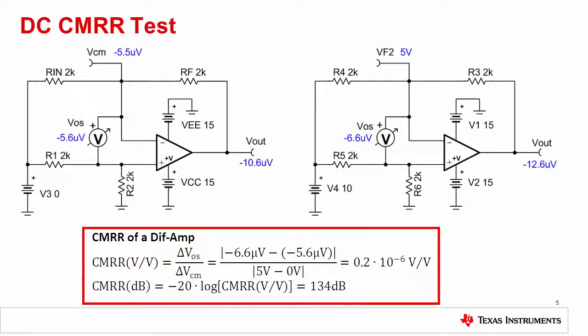This slide shows a simulation of the DC CMRR test circuit. The input signal ranges from 0 to 10 volts, which translates to a 0 to 5 volt common mode signal. The common mode rejection is calculated as the change in offset over the change in common mode. For this example, CMRR is 0.2 microvolts per volt, or 134 dB.